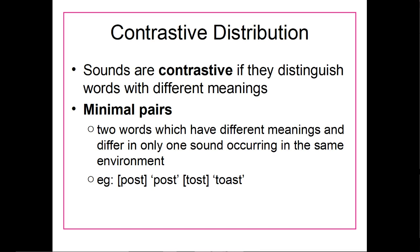Contrastive distribution is when we have two or more sounds that distinguish words with different meanings. For example, the English words 'post' and 'toast' have the sound P, the voiceless bilabial stop, and the sound T, the voiceless alveolar stop, at the start of the words. Post and toast are different words with different sounds at the start, but otherwise the same. The P and T are the only difference, yet that one sound difference is enough to change the meaning of the word.